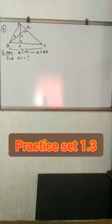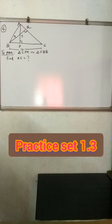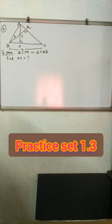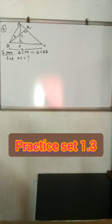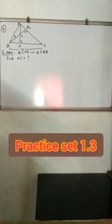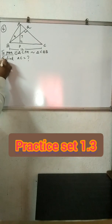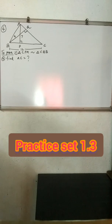Fourth example: in triangle ABC, AP is perpendicular to BC and BQ is perpendicular to AC. Prove that triangle CPA is similar to triangle CQB. Given AP equals 7, BQ equals 8, BC equals 12 — find AC. There are two parts: first, prove the similarity; second, find side AC.